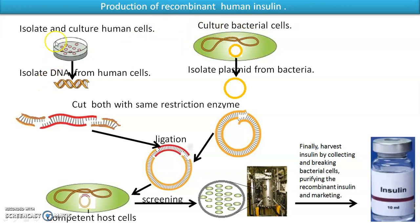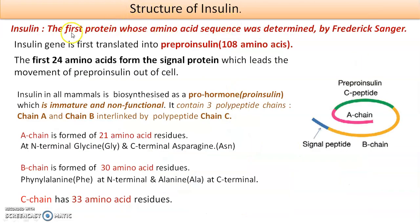For recombinant insulin production, the general process involves culturing human cells, isolating the insulin gene (the DNA of interest), culturing bacterial cells, extracting the plasmid, cleaving both with the same restriction enzyme, ligating them, introducing the construct into competent cells, screening transformants, culturing in bioreactors, and harvesting insulin. Insulin was also the first protein whose complete amino acid sequencing was done — this was achieved by Frederick Sanger — which paved the way for recombinant insulin preparation.